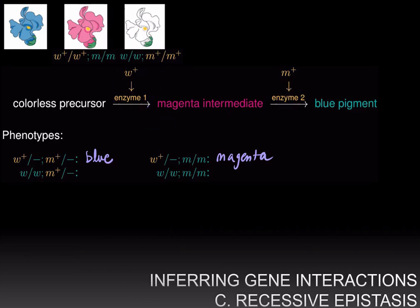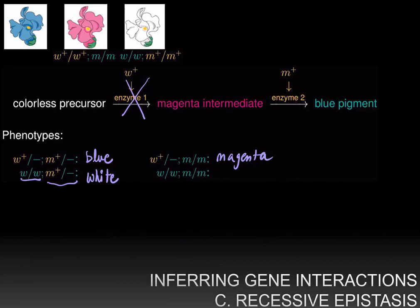If you are mutant for the first gene, homozygous little w over little w, but have the dominant phenotype for the second gene with at least one allele making enzyme two, you will be blocked at the first stage because you lack enzyme one. The colorless precursor never gets converted into magenta, so there is no question of converting magenta into blue even though you have enzyme two. Therefore your phenotype is white.